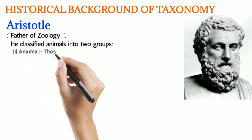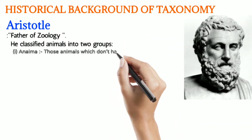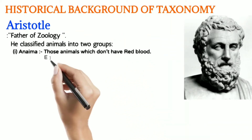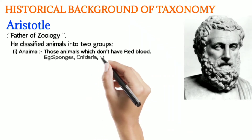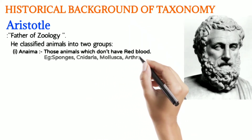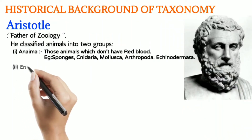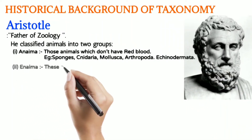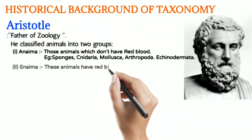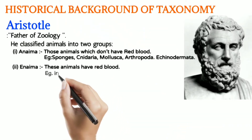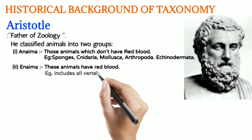Aristotle classified animals into two groups. The first was Anaima, which included those animals which did not have red blood in them — for example, sponges, cnidaria, molluscs, arthropoda, and echinodermata — basically all the invertebrates. The second group was Enaima, which had all the animals with red blood in them, including all the vertebrates.